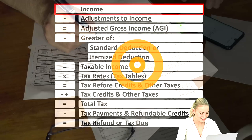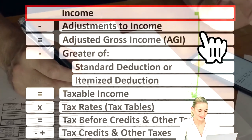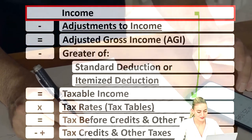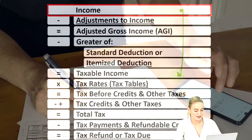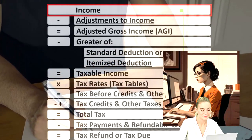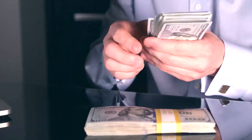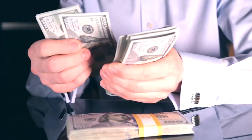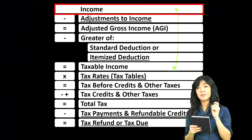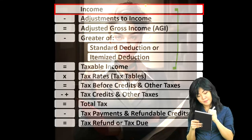Looking at the income tax formula, we're focused on line one income. The first half of the income tax formula is, in essence, an income statement — just an outline or scaffolding with other forms and schedules flowing into it. The Schedule C for business income is basically an income statement in and of itself, having income minus business expenses. The net income then flows from the Schedule C to line one income of our income tax formula.